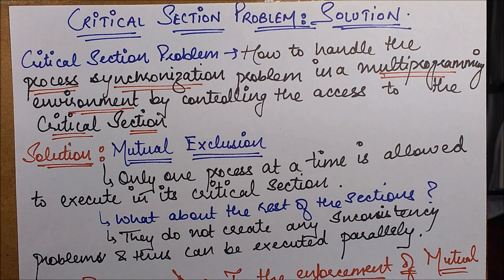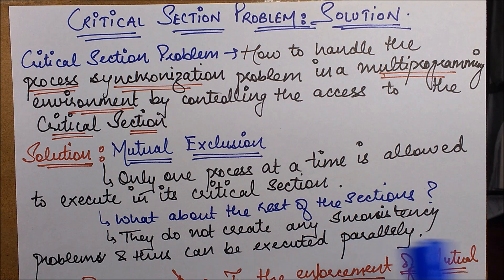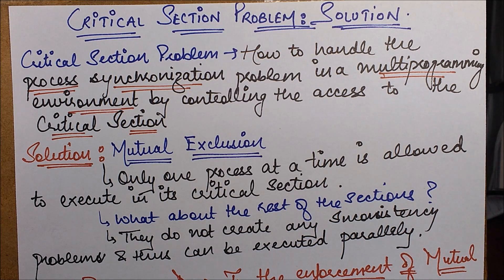Mutual exclusion states that only one process at a time is allowed to execute in its critical section. The critical section is that common portion or the common section of code. The rest of the sections, since they do not create any problem or inconsistency, can execute themselves parallelly or in any order — we are not concerned about them.